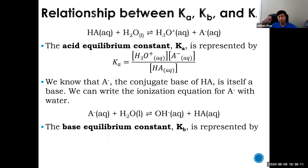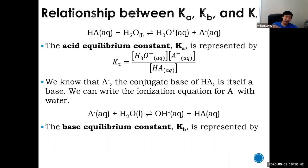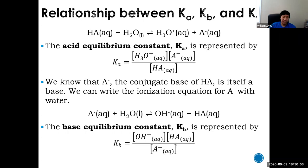Now look at A⁻ — that is the conjugate base. If you take that conjugate base and dissolve it in water, A⁻ plus H₂O, it will seek to get a proton from water and produce OH⁻ and the conjugate acid HA again. This is a basic reaction because it produces hydroxide. You can write the Kb as OH⁻ times HA divided by A⁻. So you get Ka for HA and Kb for A⁻.